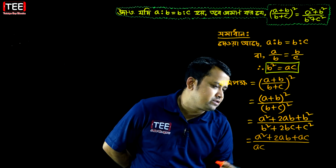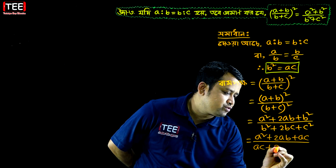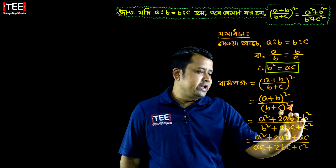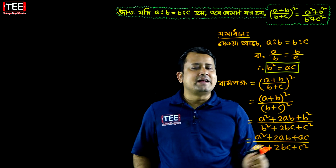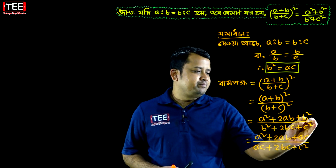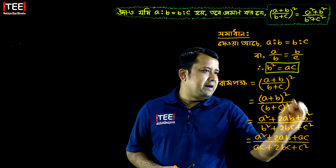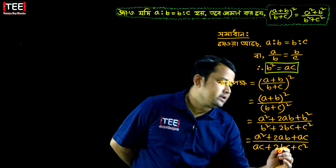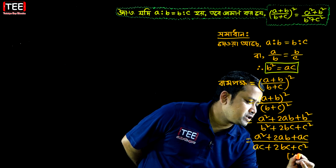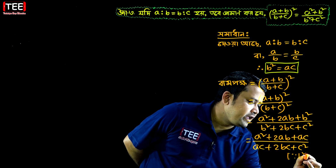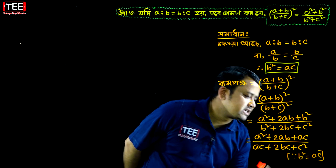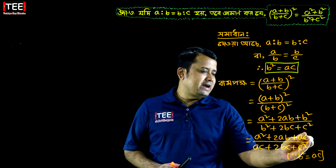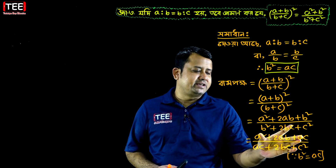This equals A square plus 2BC plus C square. So A square equal to A square, and B square equal to AC.